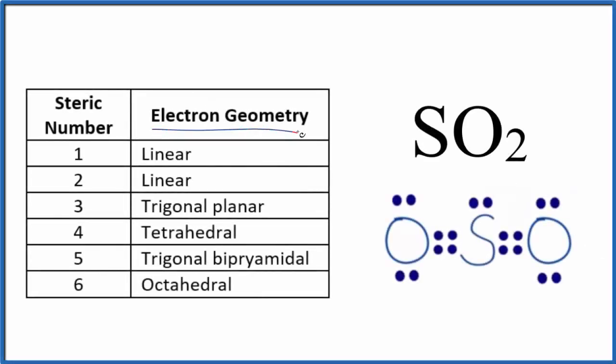Let's look at the electron geometry for SO2. That's sulfur dioxide. When we're talking about electron geometry, we're talking about the number of electron domains bonded to the central atom.